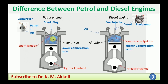Regarding the cycle of operation: the petrol engine operates on the Otto cycle — suction, compression, expansion or power, and exhaust. This is also called the constant volume cycle. The diesel engine works on the diesel cycle, which is a constant pressure cycle, as can be seen on the PV diagram.